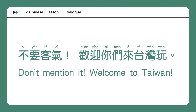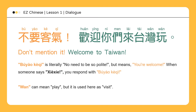不客气，不客气。欢迎你们来台湾，欢迎你们来台湾。Don't mention it. Welcome to Taiwan. 不客气 is literally "no need to be so polite," but means "you're welcome." When someone says 谢谢, you respond with 不要客气. 玩 can mean "play," but it is used here as "visit." 不要客气 — no need to be so polite — you're welcome.